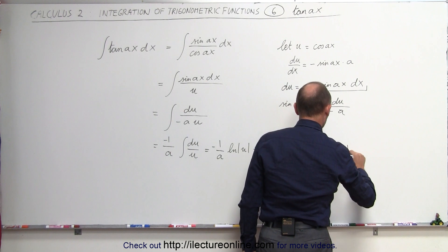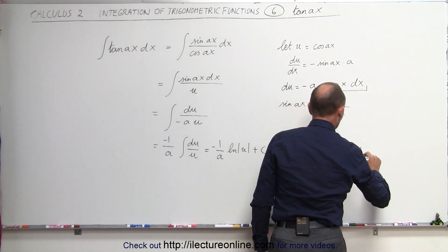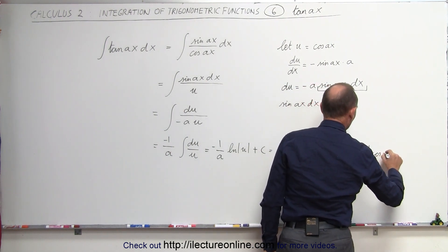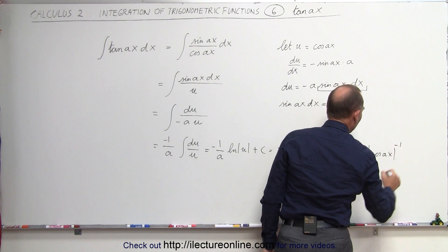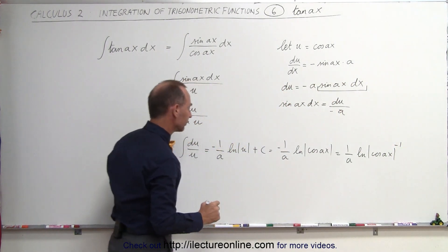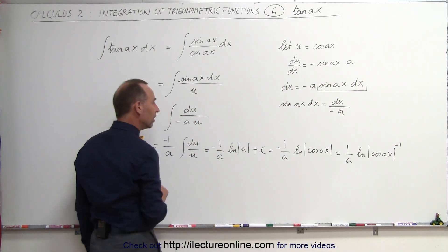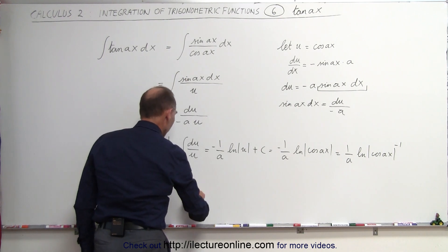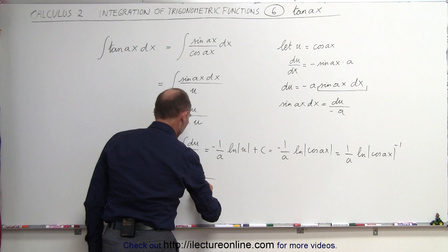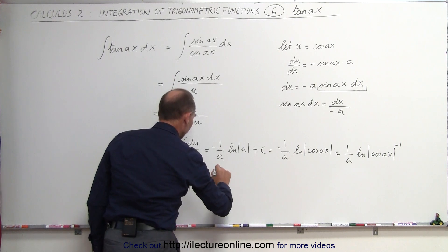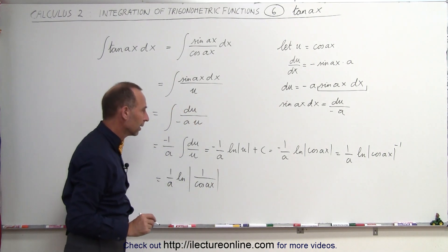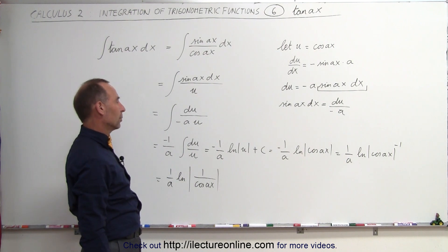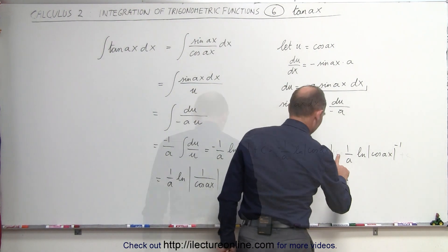This can now be written as 1 over A times the natural log of the cosine of Ax raised to the minus 1 power, which is equal to 1 over A times the natural log of 1 over the cosine of Ax. Oh, I keep forgetting my plus C's, don't I?